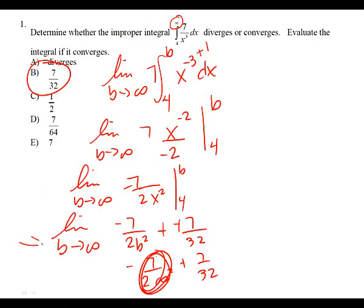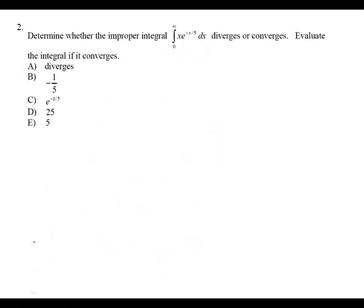Whenever you get to that line, it's typically infinity or negative infinity that you're putting in. Let's do number two.